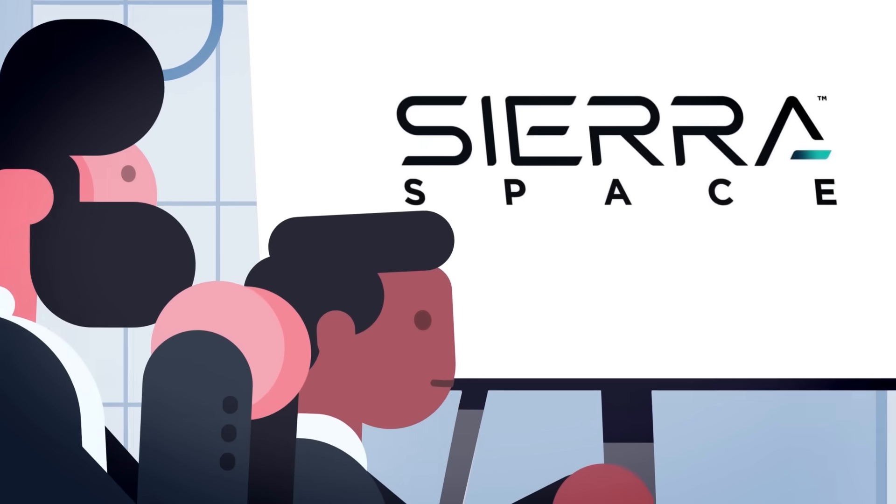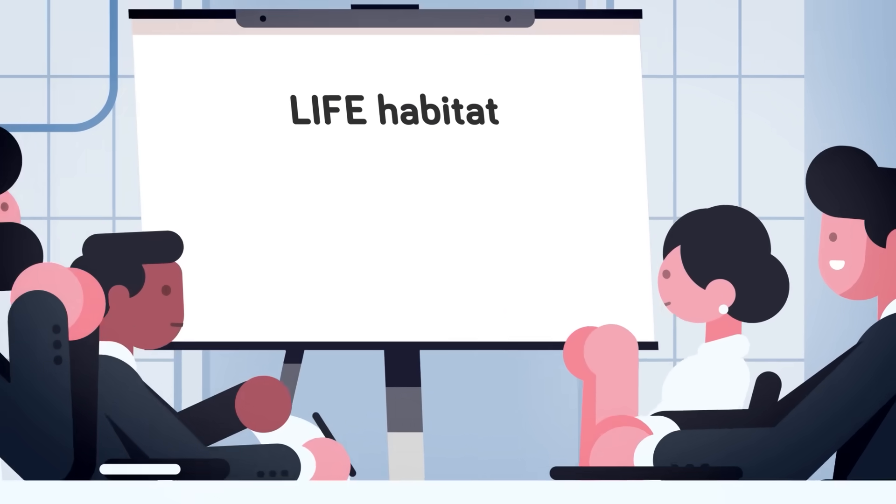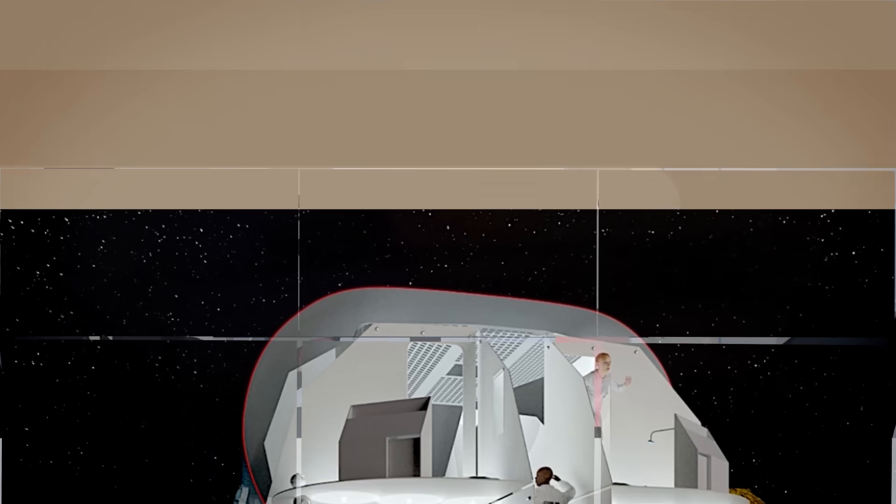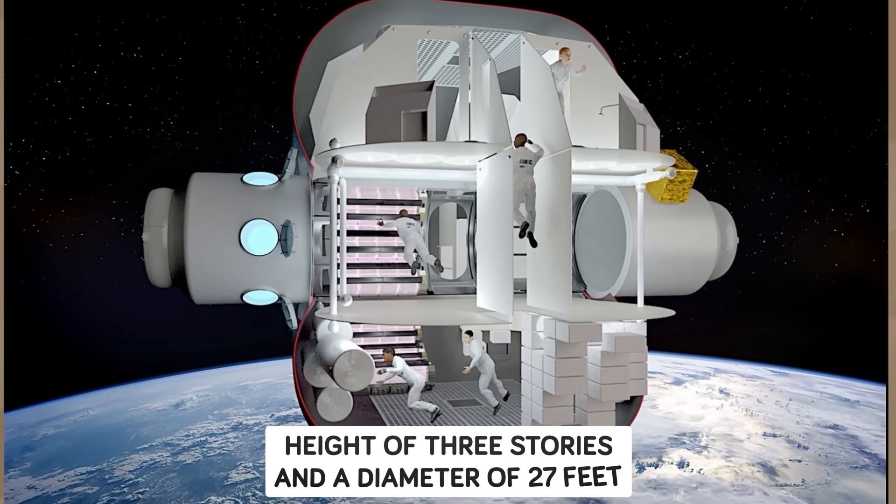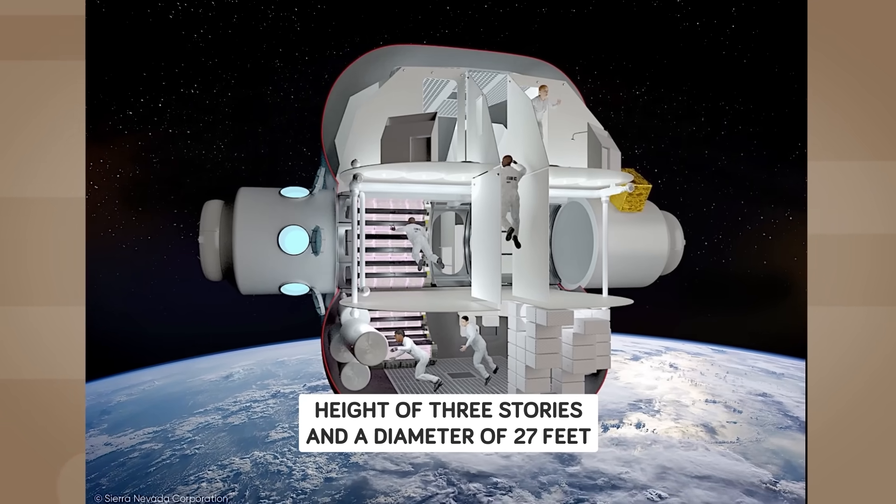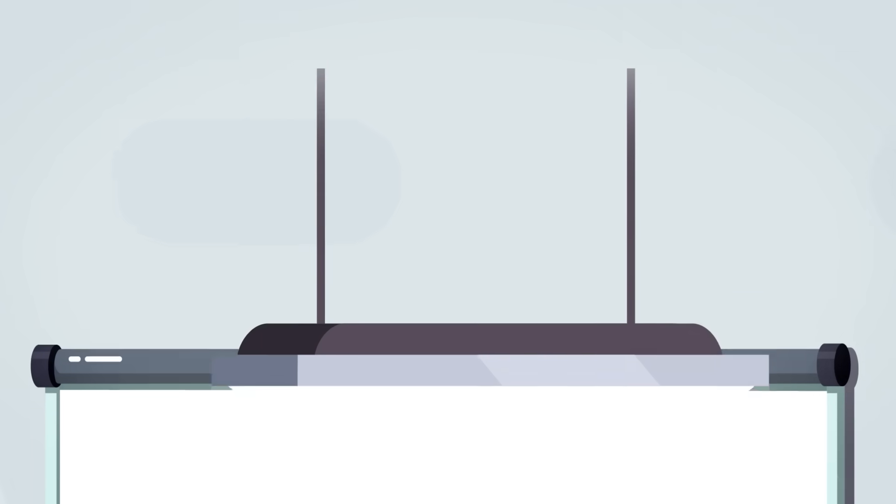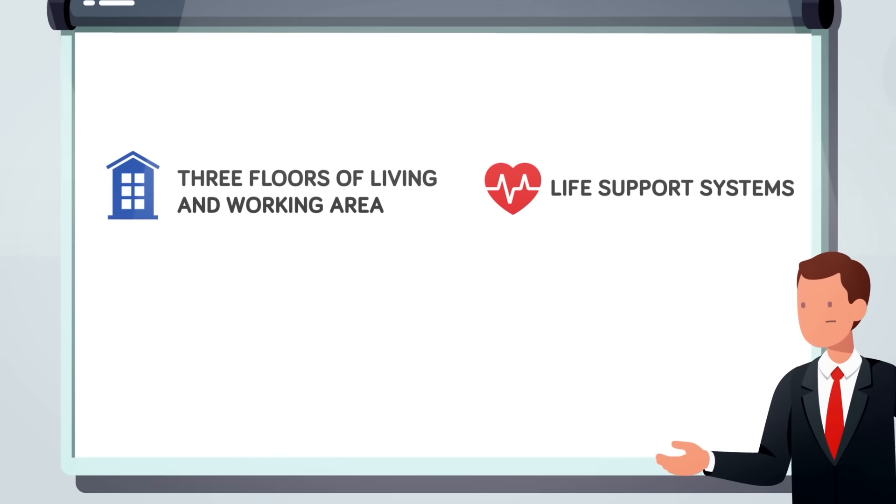Sierra Space is aiming even higher than a winged space plane capable of transporting people to the ISS. They're also developing the Life Habitat - not the cereal or the board game, but the Large Integrated Flexible Environment Habitat - a structure that launches via a rocket and once in orbit inflates to a height of three stories and a diameter of 27 feet. It's likely to be a while before it's ready, but the plans for this mobile habitat and workspace are ambitious. As the Sierra Space website put it, remote work will never be the same. They're promising three floors of living and working area, able to accommodate crews of between four and twelve people.